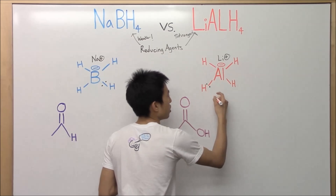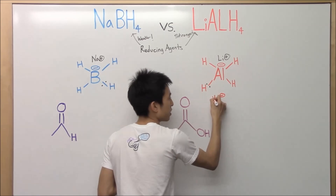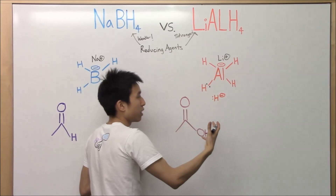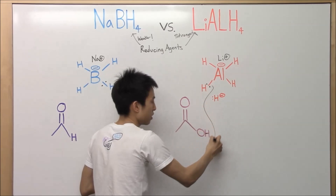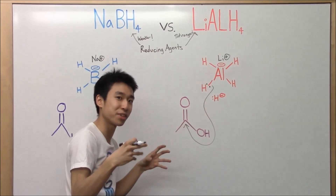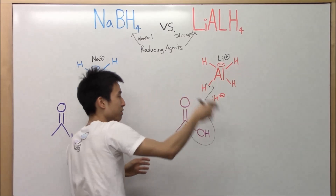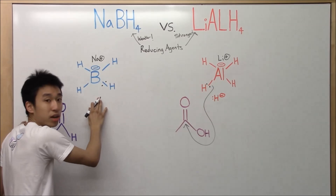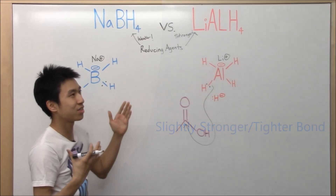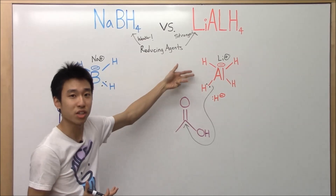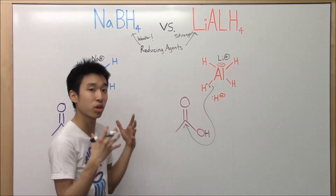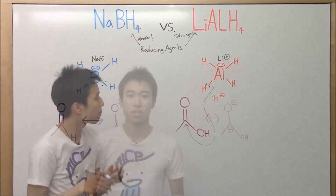A hydride is just H minus, because it has two electrons. It's easier to do this mechanism step with lithium aluminum hydride, because the hydrogens are already so loose — they're hanging on for dear life, they can just leave and attack. Versus sodium borohydride, where the hydrogens are not as free. That's part of the reason why lithium aluminum hydride is more reactive: the hydrogens are all ready to go.